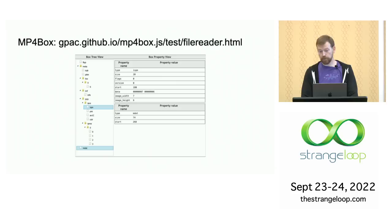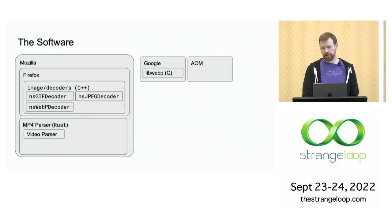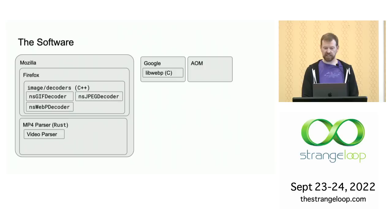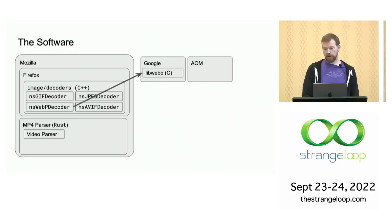Now let's talk about the software. Firefox has supported the AV1 codec for video playback since 2019, so my work was parsing the AVIF container and integrating it into Firefox's image system. I started by following the template of WebP support, which was added in 2018 and is only about 600 lines of C++. It's so small because it relies on a library from Google for doing both parsing the WebP container and decoding the image to RGB pixel values.